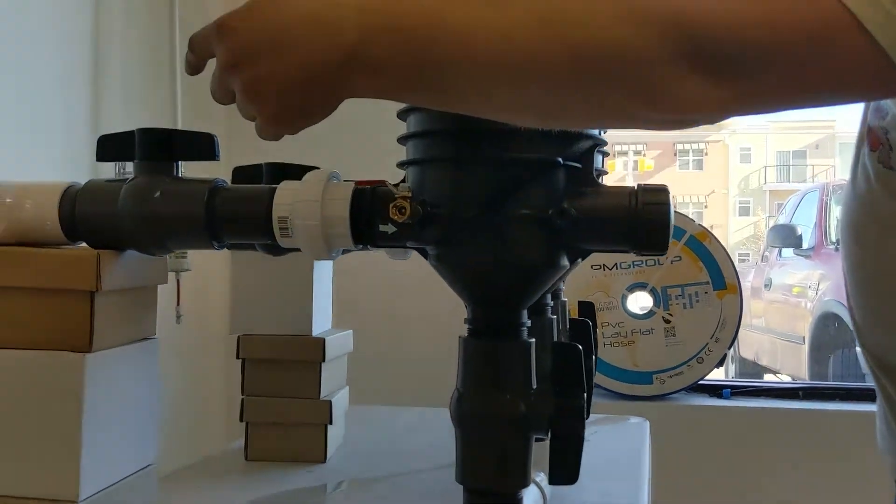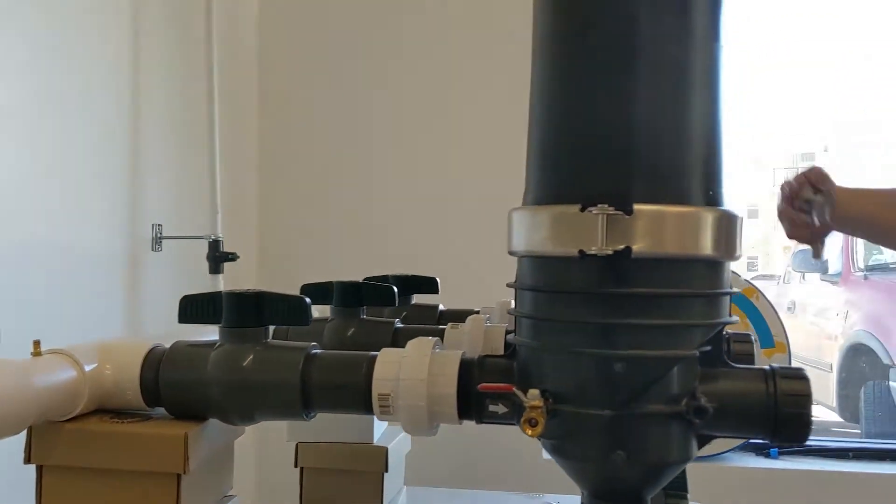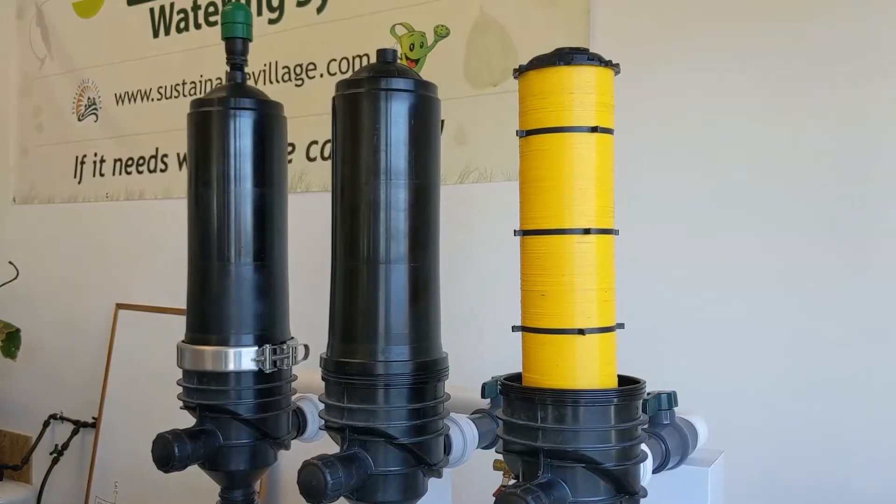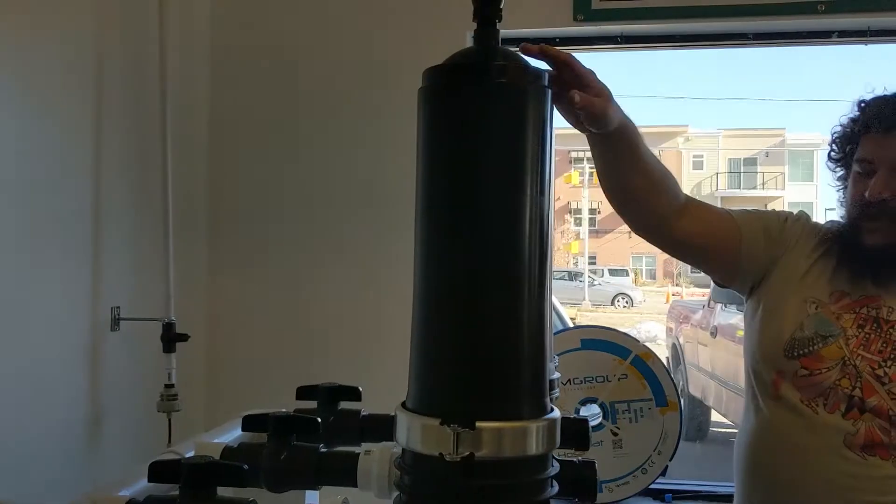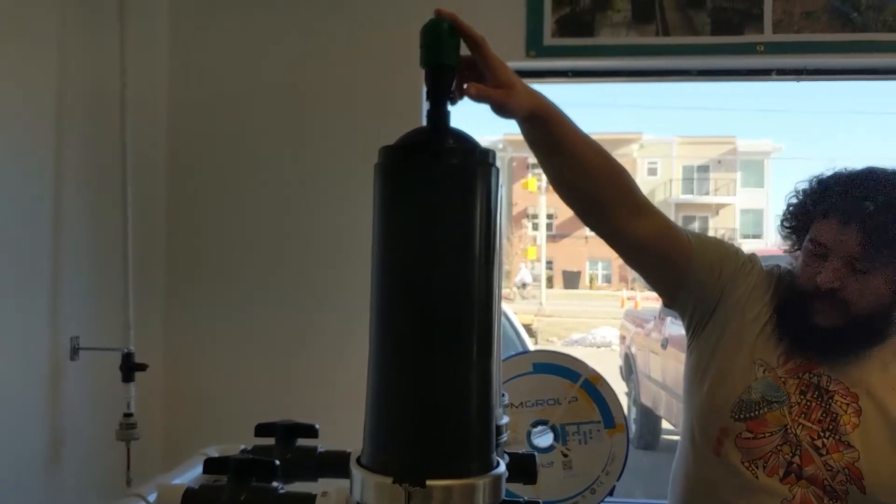The way these work is you have water coming in through this side, runs through this manifold, and then through all three filters at once. They generally have this cap on them and an air vent on the top.